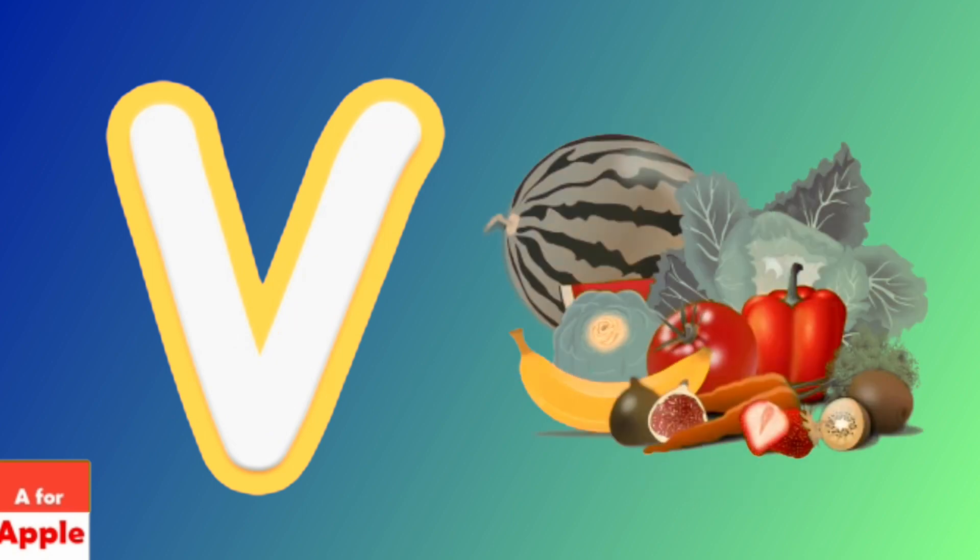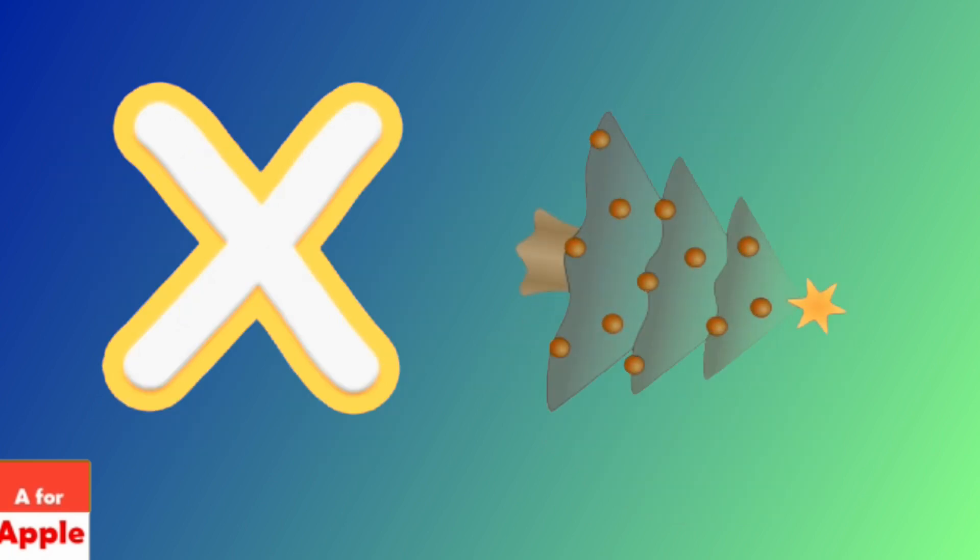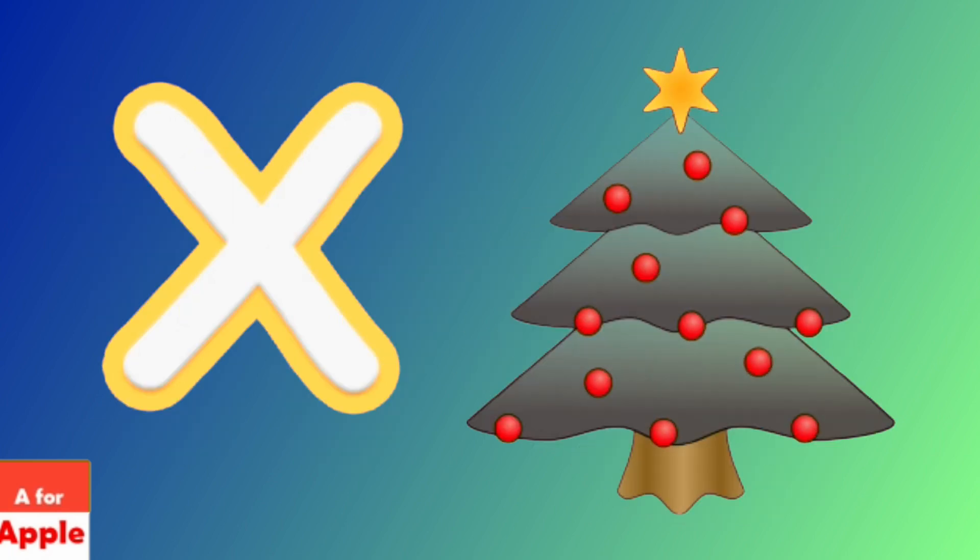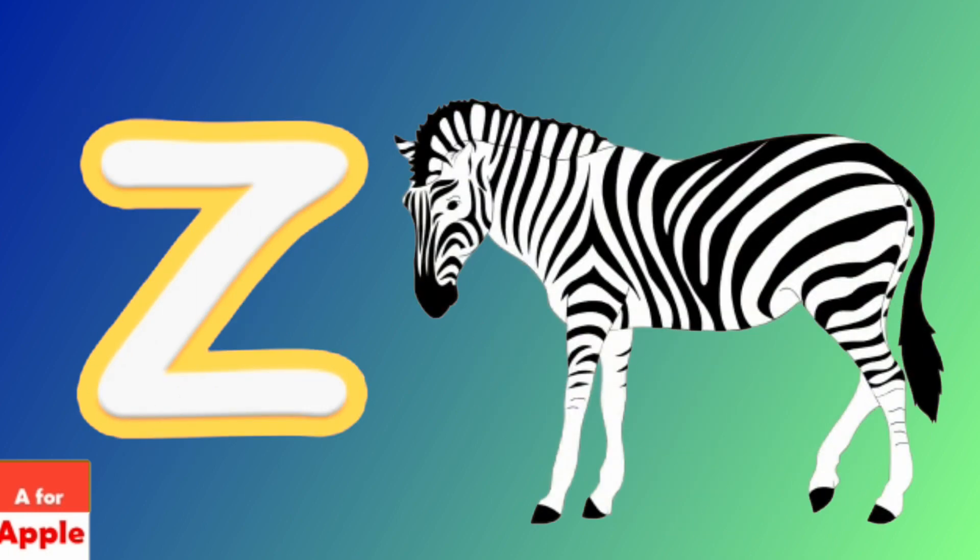V for vegetables, vegetables. W for well, well. X for Christmas tree, Christmas tree. Y for yacht, yacht. Z for zebra, zebra.